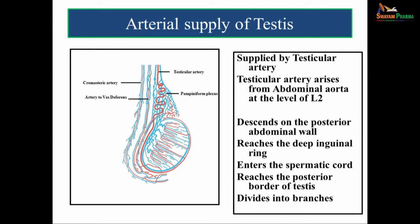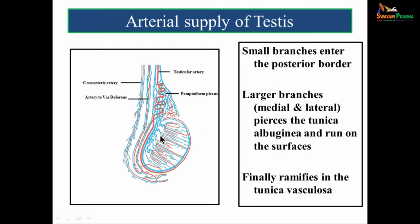The blood supply: the arterial supply of testis is mainly by the testicular artery. It arises from the abdominal aorta at the level of L2, descends on the posterior abdominal wall, reaches the deep inguinal ring, enters the spermatic cord, then reaches the posterior border of testis where it divides into branches. Small branches enter the posterior border; larger medial and lateral branches pierce the tunica albuginea, run on the surfaces, and finally ramify in the tunica vasculosa.